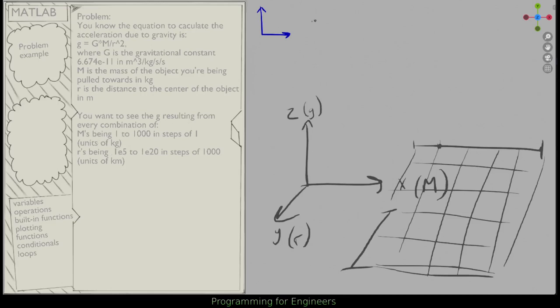So I know m, I'll say is 1, going 1, going 1000, because it starts at 1, steps of 1, and ends at 1000.